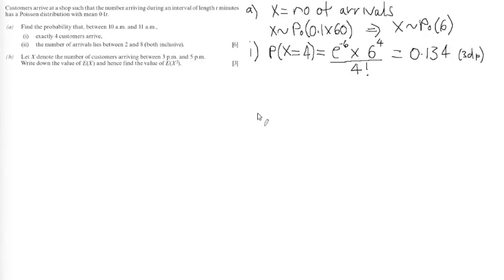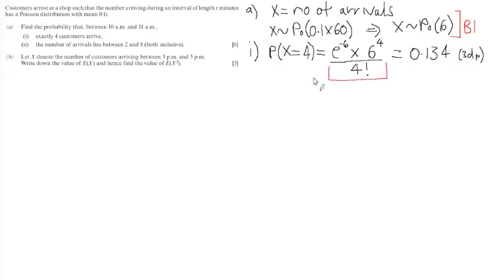Let's look at how we get the marks here. First, we get a statement mark for identifying that X has a Poisson distribution with a mean of 6. Second, we get a method mark for demonstrating the correct use of the formula. And thirdly, we get an accuracy mark for that correctly rounded answer.